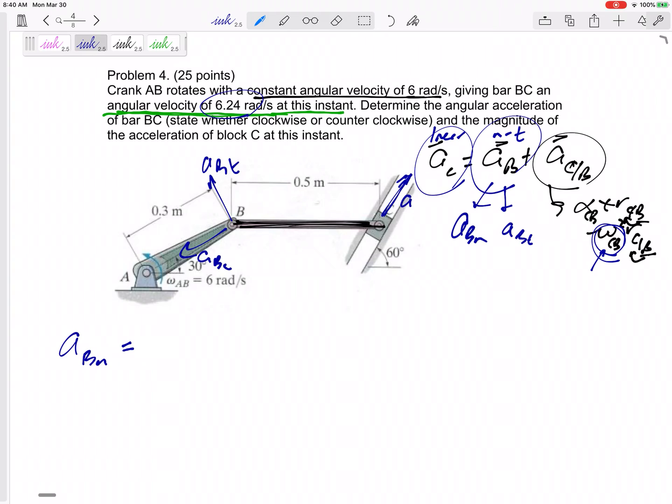So A, B normal, I am looking at link A, B, right? Not bar BC. I'm taking a side note, right? I'm going to come back to this equation, but before I come back to this equation, I'm taking a side note and looking at link A, B, and let me try to find everything I can about the acceleration. Maybe I can't find the whole thing, but I can write it in terms of anything I can.